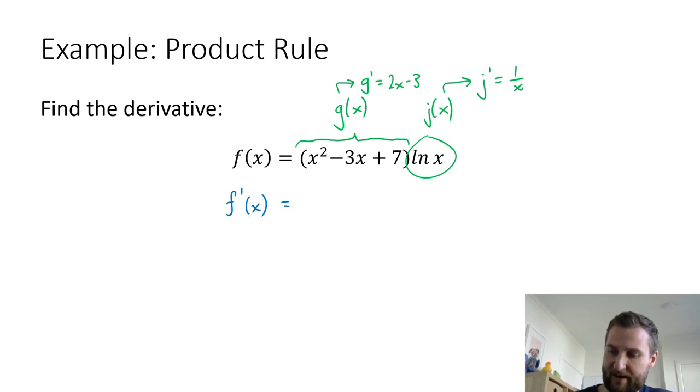So f'(x). It's my first term and you take that derivative. So that is 2x - 3. Close that bracket. Next up, I'm just rewriting my second term. My second term is natural log of x, just rewrite it. Now I add and I'm going to do the opposite. I'm going to rewrite my first term. It's a big set of brackets, just copy it down.